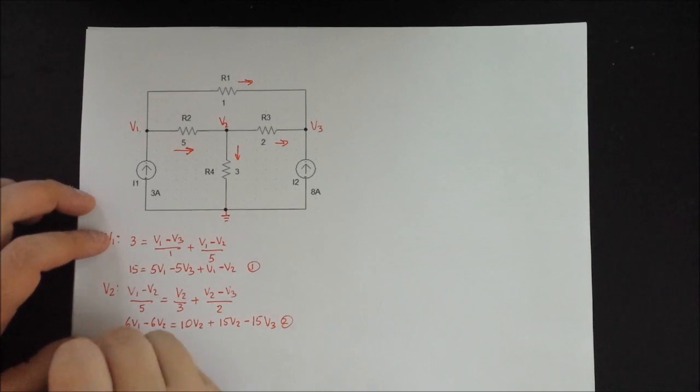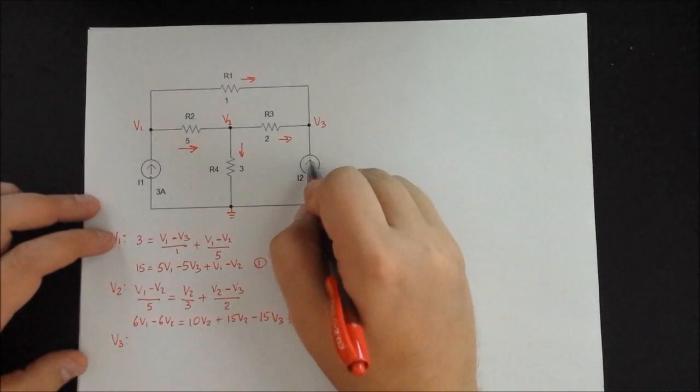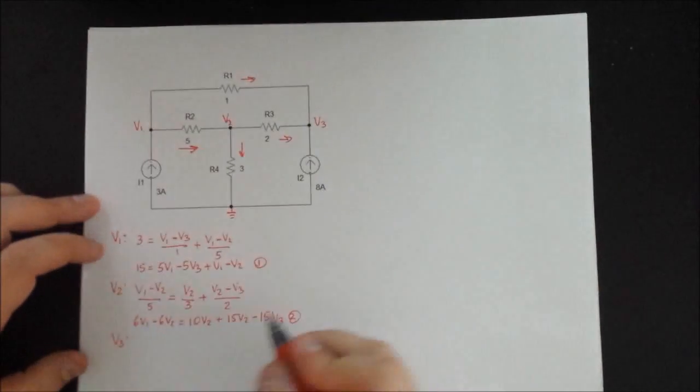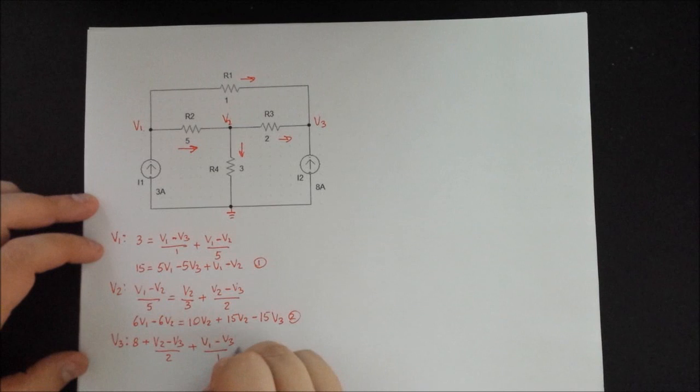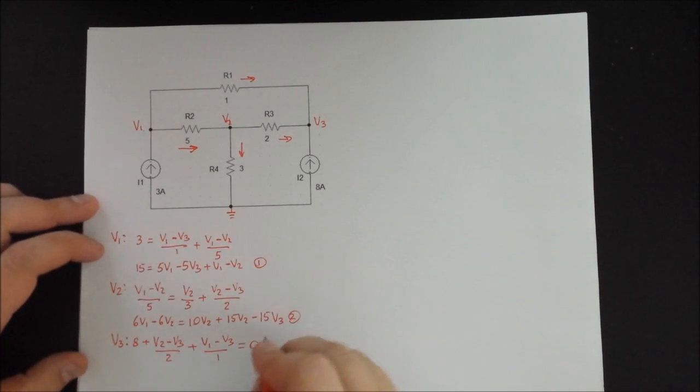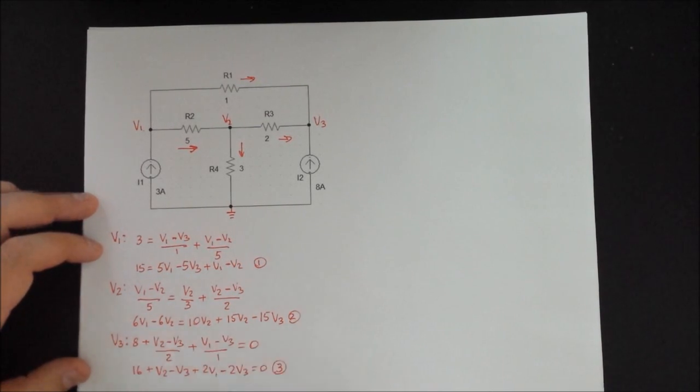So that's our second equation. And finally for V3, we have one current that's coming in, two and three, so we have all three currents that are coming in. So we're going to start with the current source, so it's 8 plus V2 minus V3 divided by 2, plus V1 minus V3 divided by 1. And all of that is equal to 0 since nothing is coming out. And we're going to multiply by 2, so it's 16 plus V2 minus V3 plus 2V1 minus 2V3 is equal to 0. And that is going to be our third equation.